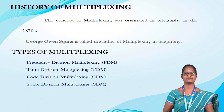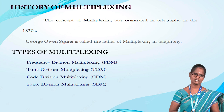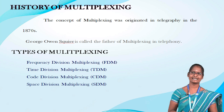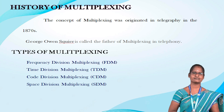There are four types of multiplexing. The first one is Frequency Division Multiplexing, called FDM. The second one is Time Division Multiplexing, called TDM. The third one is Code Division Multiplexing, called CDM. The fourth one is Space Division Multiplexing, called SDM.